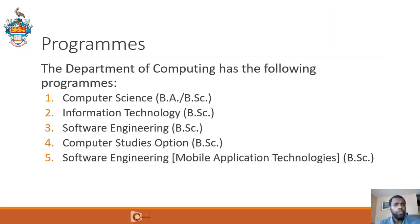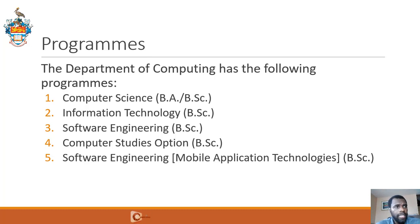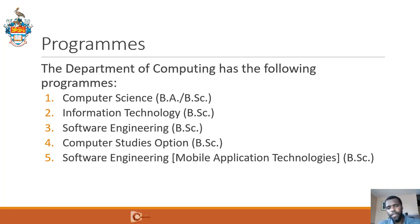The Department of Computing has the following degree programs: Computer Science — we have a Bachelor of Arts and a Bachelor of Science. Information Technology — we have the Bachelor of Science. In Software Engineering, we have two programs: a three-year software engineering program which gives you a BSc, and a Software Engineering Mobile Application Technologies program which is four years long, also giving you a Bachelor of Science. That program was designed such that students spend two years in the Caribbean and two years in China.